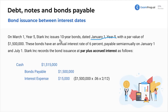We've been accruing interest for two months. This is the issuance journal entry, which normally just has cash and bonds payable — and a discount or premium — but now we also see interest expense, because we've got 1.5 million at a 6% interest rate for two months.